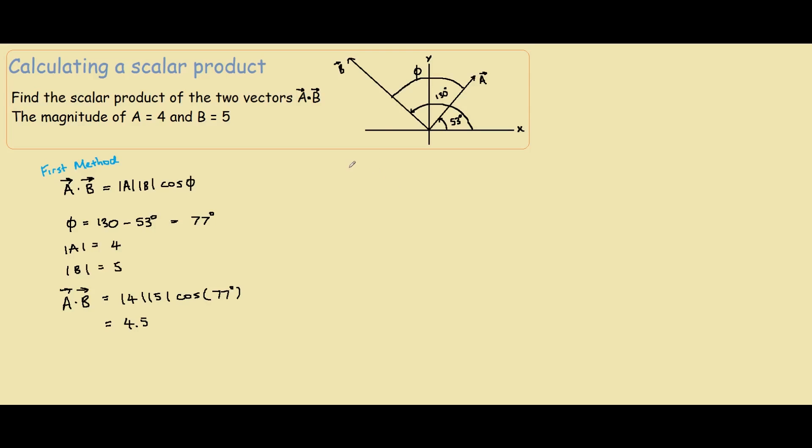Our second method: A dot B equals Ax times Bx plus Ay times By. How do we find the components? We know that Ax is this component here and Ay is this component here. It's actually really simple.